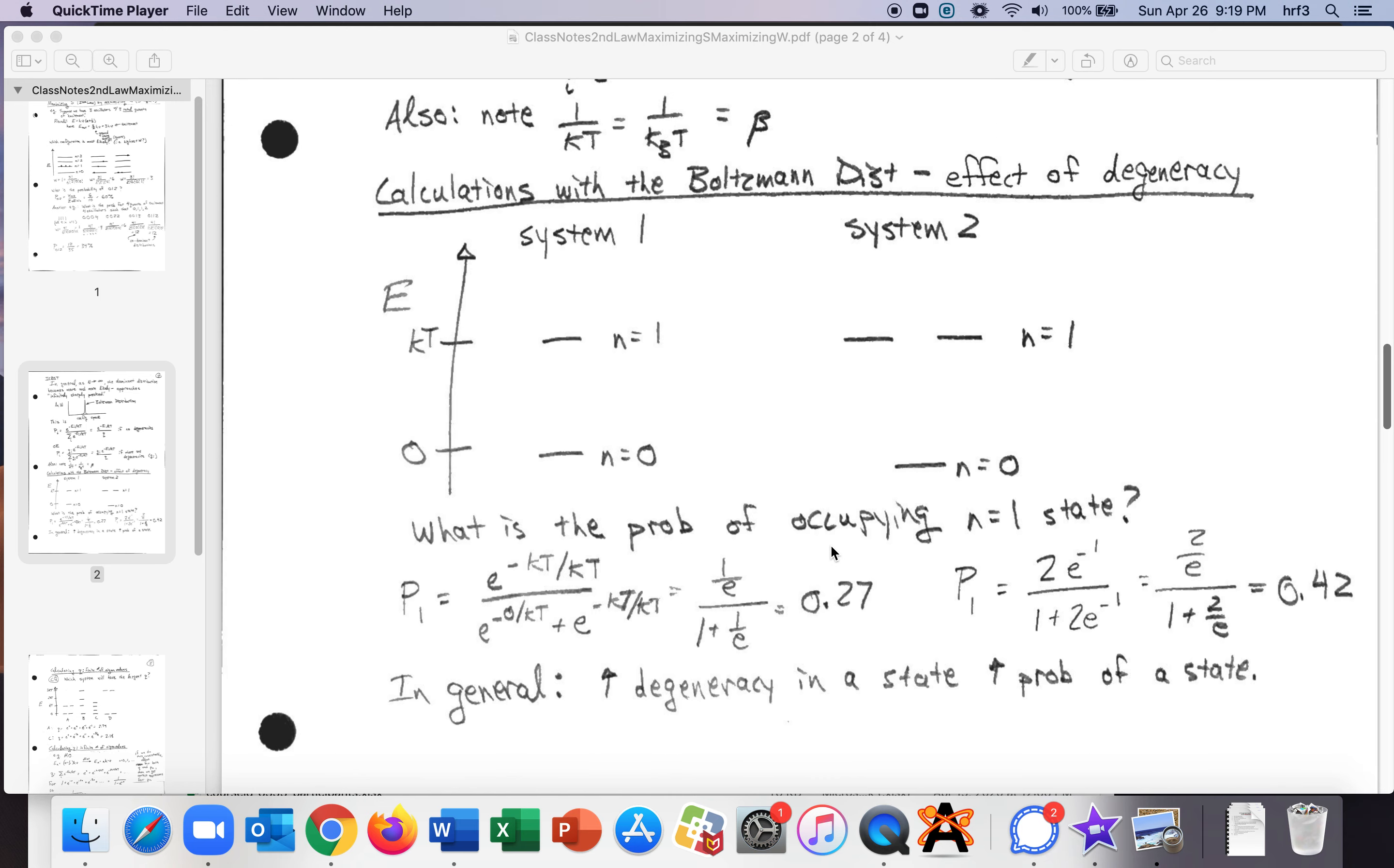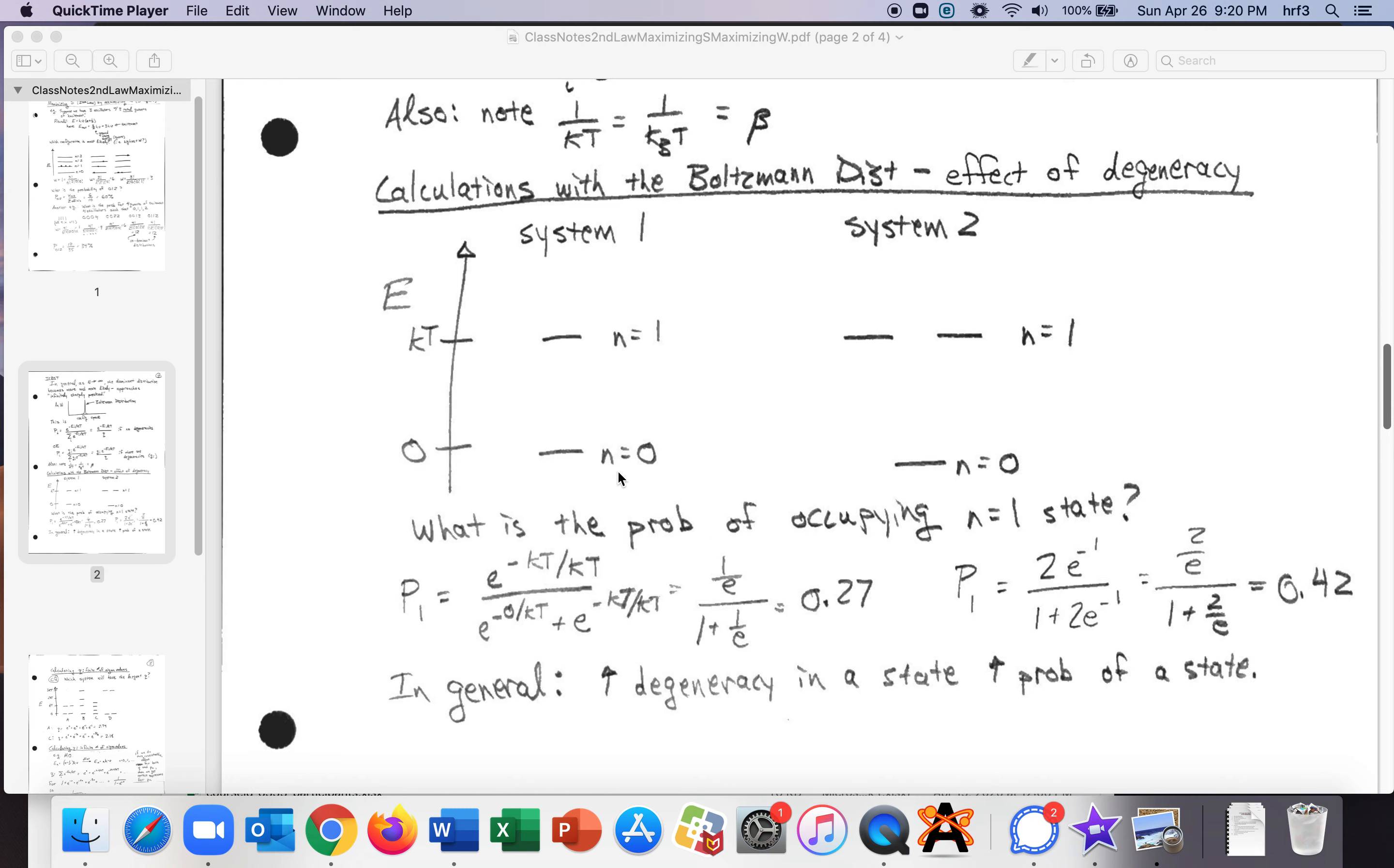Okay so if we know that that's the distribution for a large number then let's take a look at a system with let's take a look at the effect of degeneracy. So we could have a system where there's just n equals zero and n equals one or we could have a system where there's n equals zero and then there's two states for n equals one and they're degenerate. And just for convenience let's say the ground state the energy is zero and the first excited state the energy is kt just because that makes the math work out easily and obviously you could scale this and it would all work out.